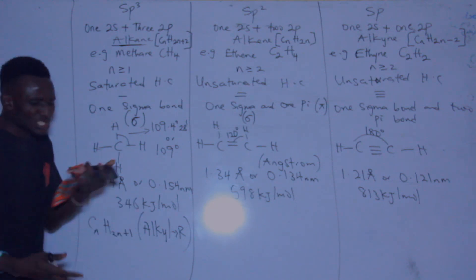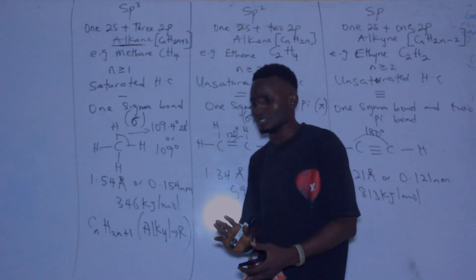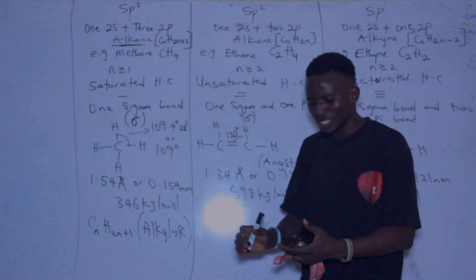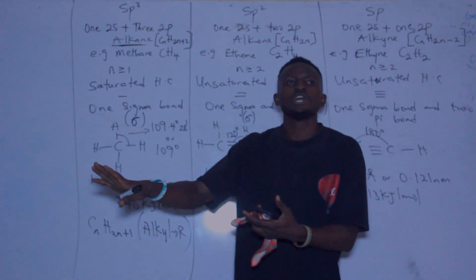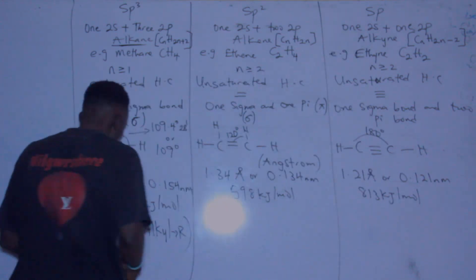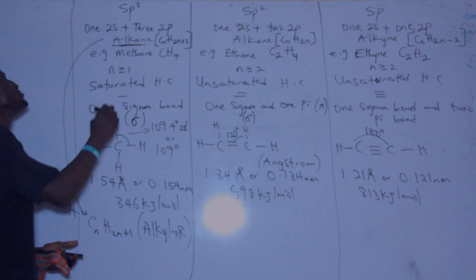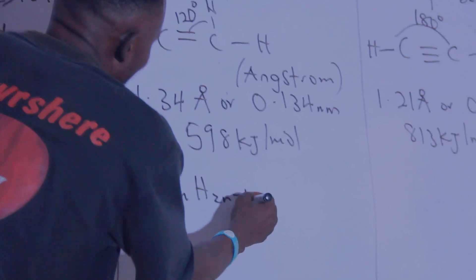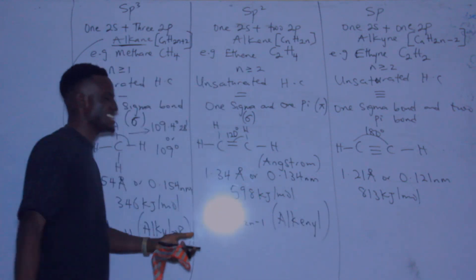Alkyl groups are derivatives of alkane. They are attachments — like methyl, ethyl, propyl — that attach to the main compound. Methyl is CH₃. They cannot stand on their own; they have a vacant bonding site used to bond with other compounds. Similarly, if you remove one hydrogen from the alkyne family, it gives CₙH₂ₙ₋₁, which is the alkenyl group, also an attachment.